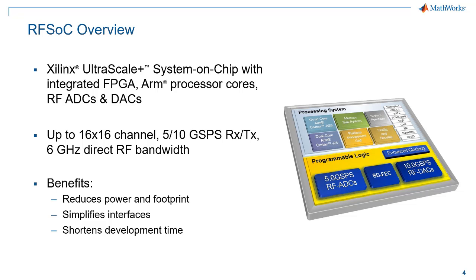Briefly, just an overview of what the RFSOC device is. It's a system-on-chip device from Xilinx which contains an integrated FPGA, ARM processing core, and RF ADC and DAC channels — up to 16 by 16 in the latest Gen 3 devices — running at 5 and 10 gigasamples per second, with 6 gigahertz of direct RF bandwidth.